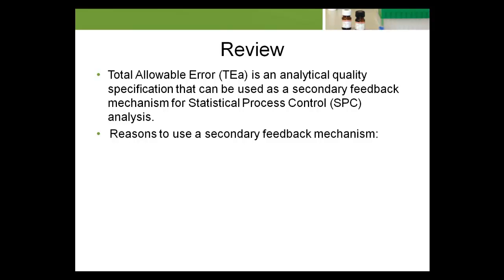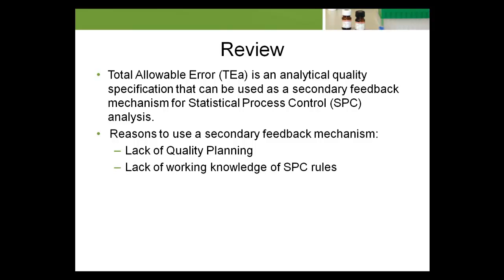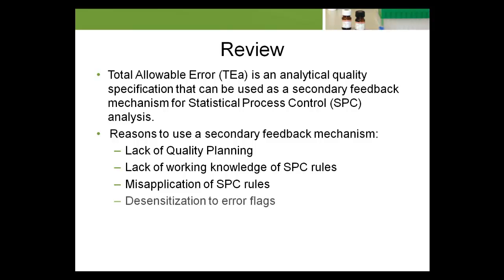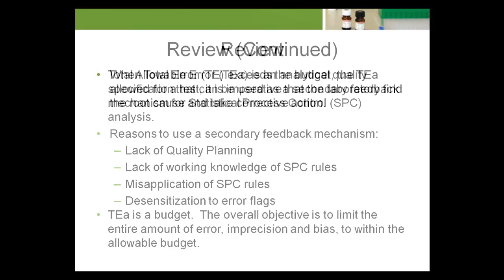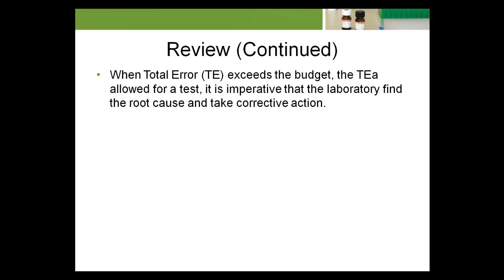Reasons to use a secondary feedback mechanism include: lack of quality planning, lack of working knowledge of SPC rules, misapplication of SPC rules, and desensitization to error flags. TEA is a budget — the overall objective is to limit the entire amount of error, imprecision and bias, to within the allowable budget. When total error exceeds the budget — the TEA allowed for a test — it's imperative that the laboratory find the root cause and take corrective action.